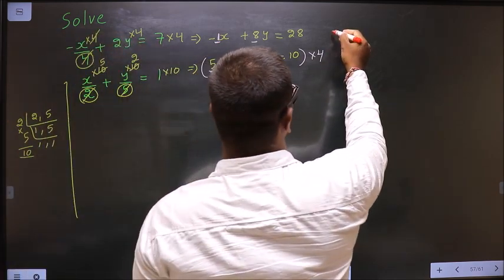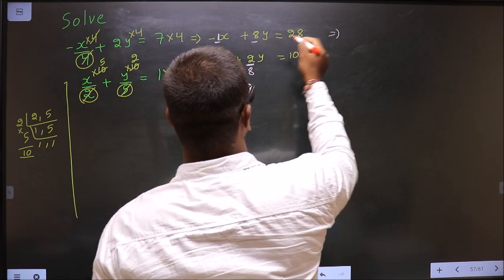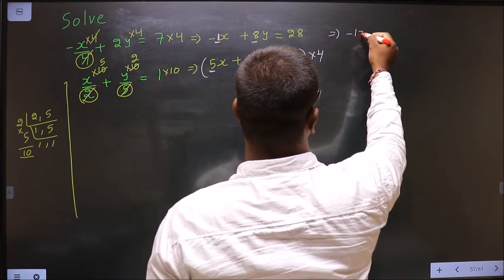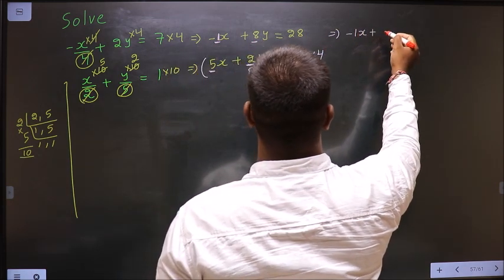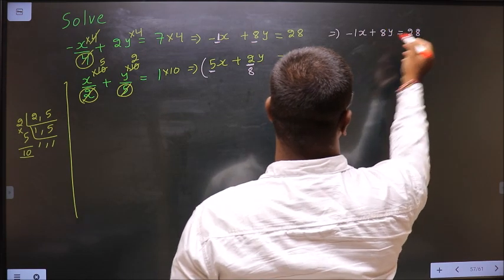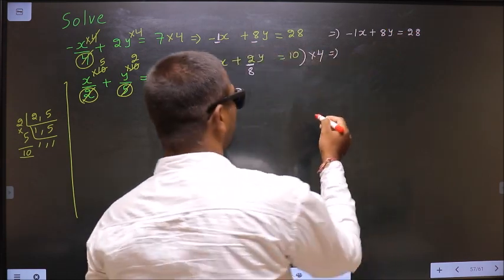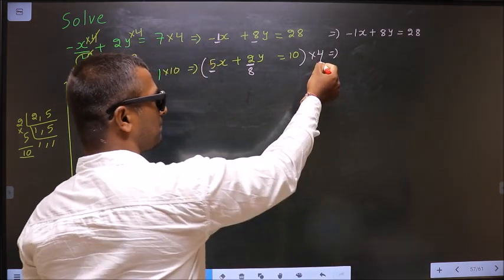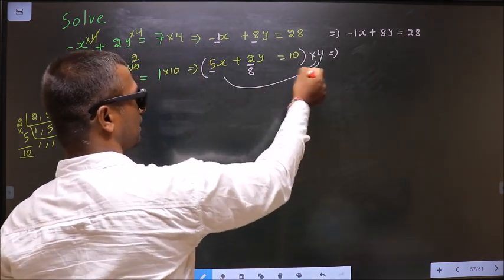Next. This equation no change, as it is. -1x + 8y = 28. Now, here how do you multiply? Means multiply this to each term.